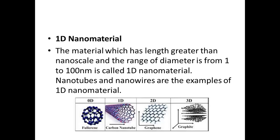Next is one-dimensional nanomaterials. These are materials which have a length greater than the nanoscale, while the diameter is in the range of 1 to 100 nanometers. Examples of one-dimensional nanomaterials are nanotubes and nanowires.